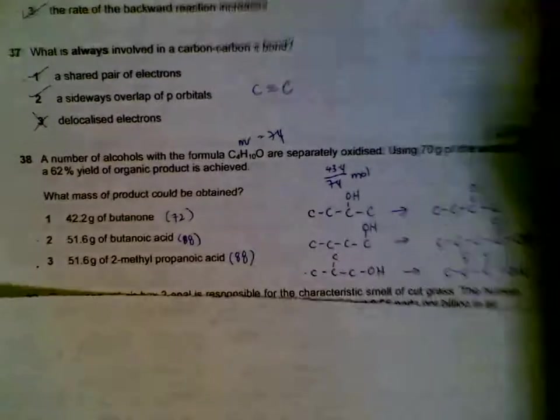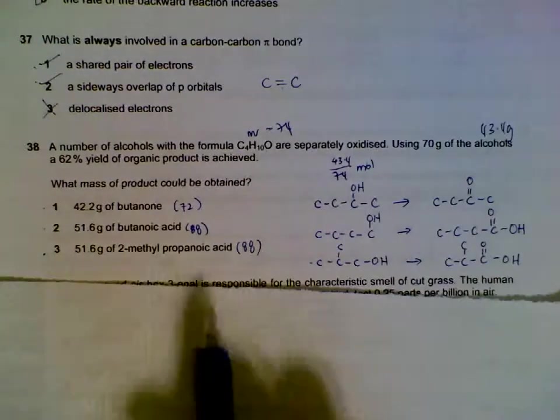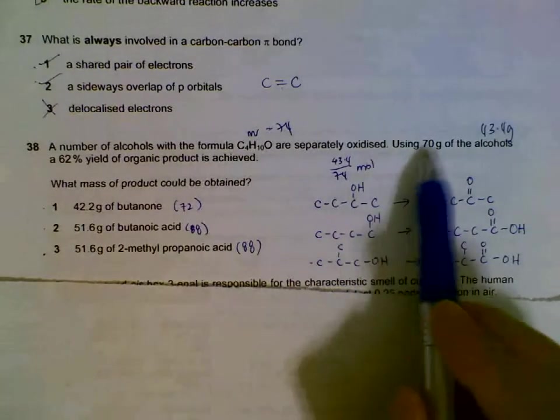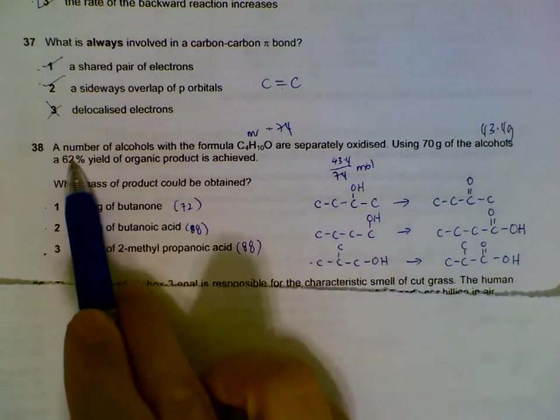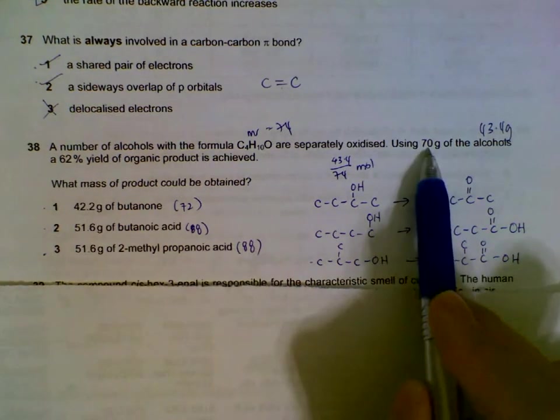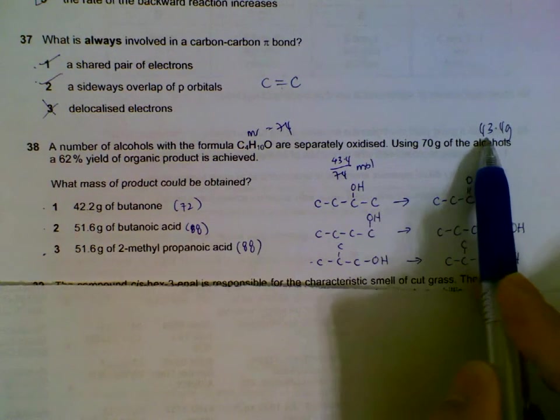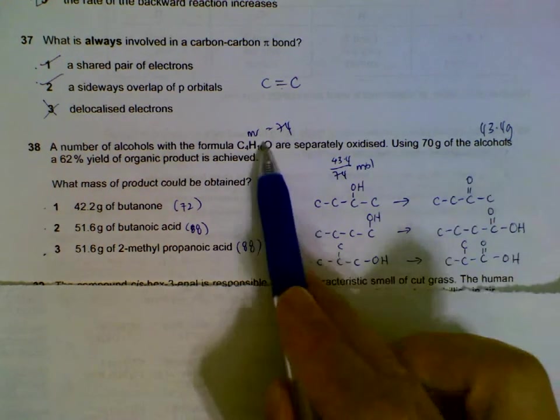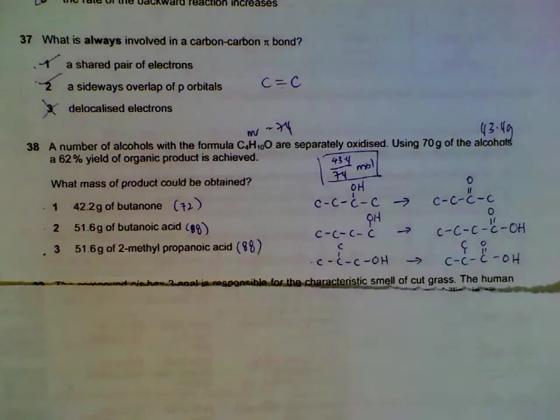Question 38: Involves quite a bit of calculation. We have our alcohol, and they say that of the 70 grams, 62 percent yield is achieved. So we can actually start off with the idea that out of the 70 grams, 43.4 grams of the alcohol is converted. And from this 43.4 grams of alcohol, we divide by the molar mass of the alcohol to get the moles of the alcohol that is successfully converted.